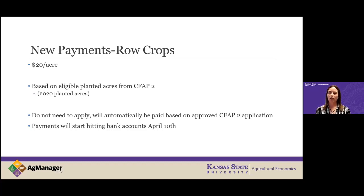A question we've received quite a bit is: who gets the payment if there's a new operator in 2021? It's actually the person on the CFAP 2 application. It is a payment for last year's crop, so the new operator does not get the payment on the ground — it is the operator from 2020 who receives that payment.